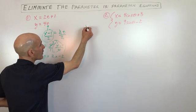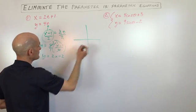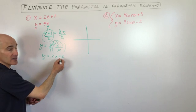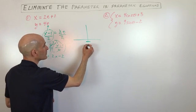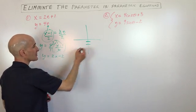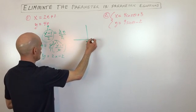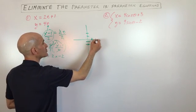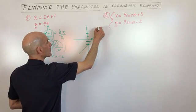Now we have an equation just in terms of x and y. If we want to graph it, we can use slope-intercept form. The slope is 2 and the y-intercept is negative 2, so we go up 2 over 1, up 2 over 1, and there's our line.